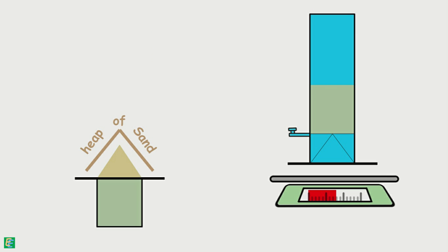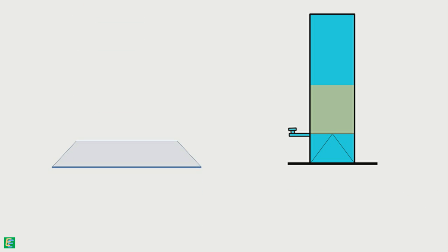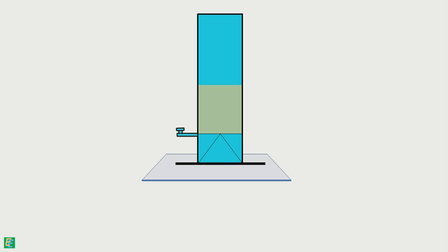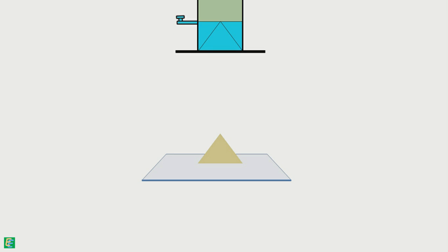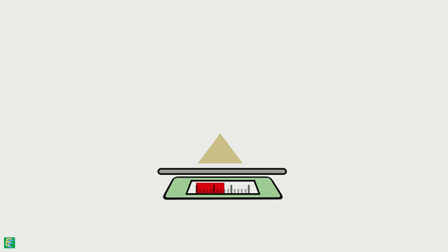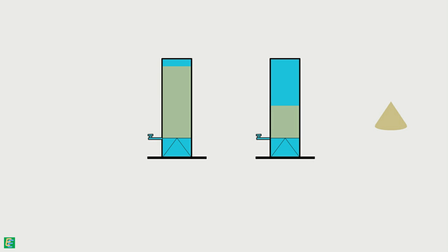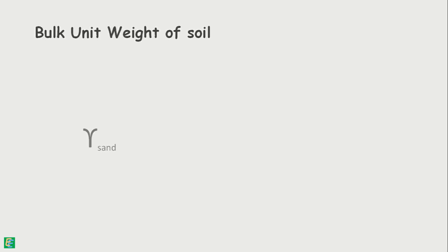A cone-type heap of sand has been formed over the calibrating container. To determine its weight, take a glass plate, place the sand pouring cylinder on it, open the shutter, and let the sand fill the conical part of the cylinder. When sand movement stops, close the shutter, remove the cylinder, and weigh the sand on the glass plate — note this as W3. The weight of sand used to fill the container, Wa, equals W1 minus W2 minus W3. Hence, the bulk unit weight of the sand can be determined by its formula.